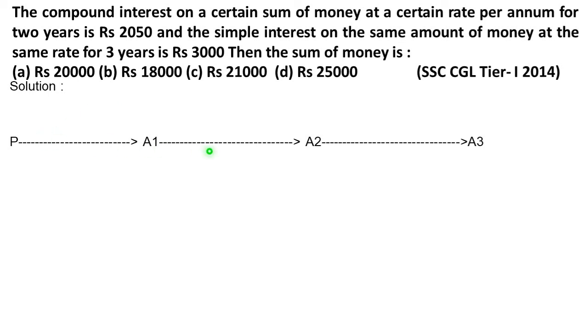Let me draw three arrows here: Principal to A1, A2, A3. The first year's amount, second year's amount will be compound, and third year's amount. Here we're given Rs 3000 simple interest and Rs 2050 compound interest.